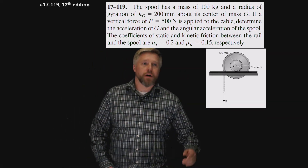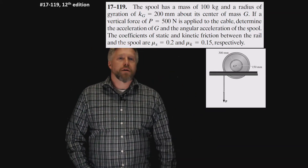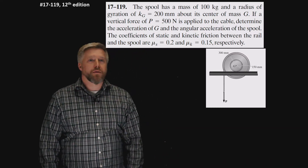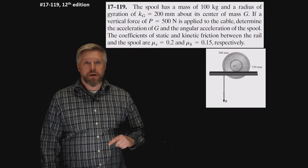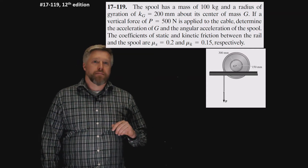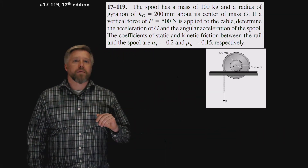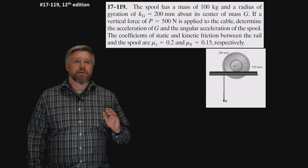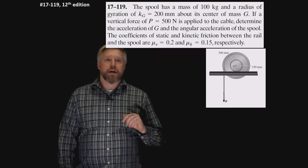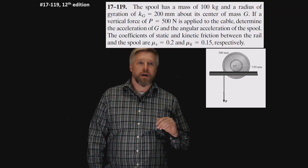The problem we're going to work on today has this spool. The spool has a mass of 100 kg with a radius of gyration k_g equals 200 mm, which we'll convert to 0.2 meters, about its center of mass G. If a vertical force P equals 500 newtons is applied to the cable, determine the acceleration of G and the angular acceleration of the spool. The coefficient of static and kinetic friction between the rail and the spool are μ_s = 0.2 and μ_k = 0.15 respectively.